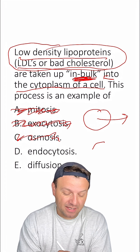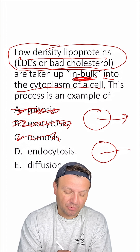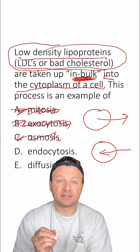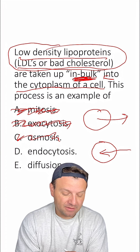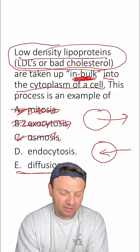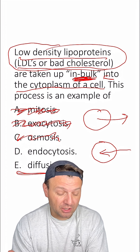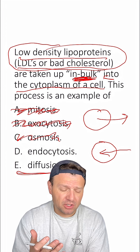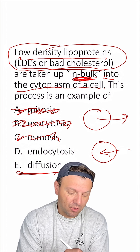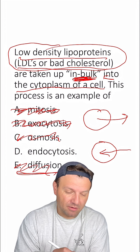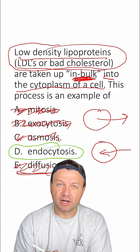D, endocytosis — that's active transport and that's when things go into the cell, so that sounds like our answer. But let's look at E, diffusion. Diffusion is molecules moving from high to low concentrations, but they're typically small molecules, not proteins. So E is out. That's why D is the right answer.